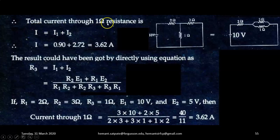So total current through 1 ohm resistance will be equal to I is equal to I1 plus I2 when both sources are acting. So I is equal to 0.90 plus 2.72 that is 3.62 ampere.